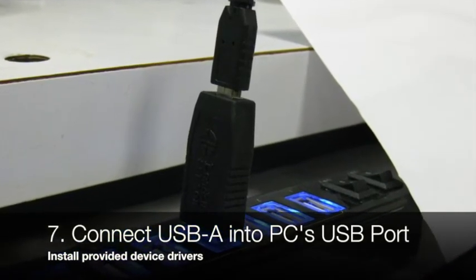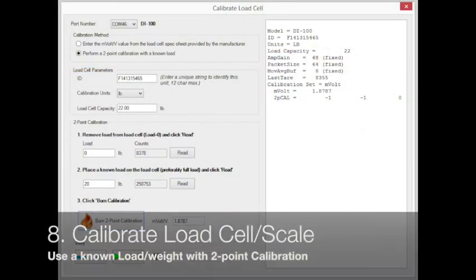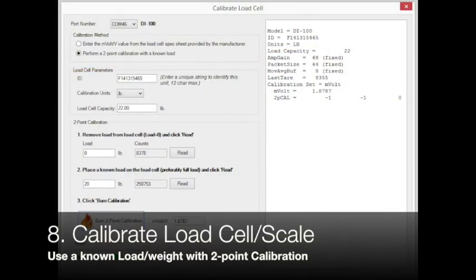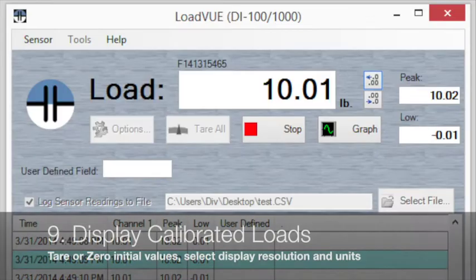You plug in the USB-A into the PC's USB port and launch the calibration program. You can do a two-point calibration with a known weight. It's a very simple two-step process.